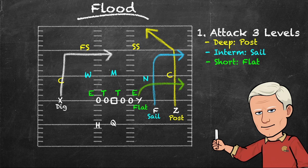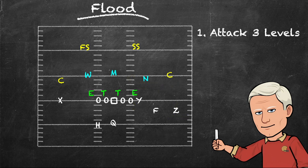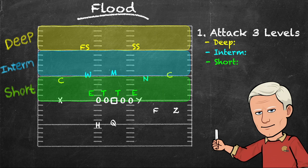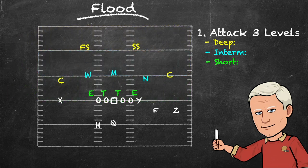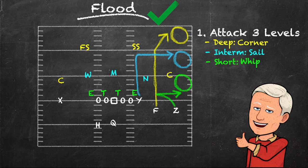The X receiver will run right into the area that has been potentially voided by the Mike Linebacker. One thing about Flood is that it is a true concept, as opposed to being synonymous with a particular route combination like Dragon, which commonly refers to the pairing of a slant and a flat. Flood just needs to get a receiver at each level of the defense to the same side. So the F can run the clear out, the Y runs the sail, and the Z can run a whip route to the flat. As long as the timing is there and the defense is threatened at all three levels to the same side, you've got a flood concept.